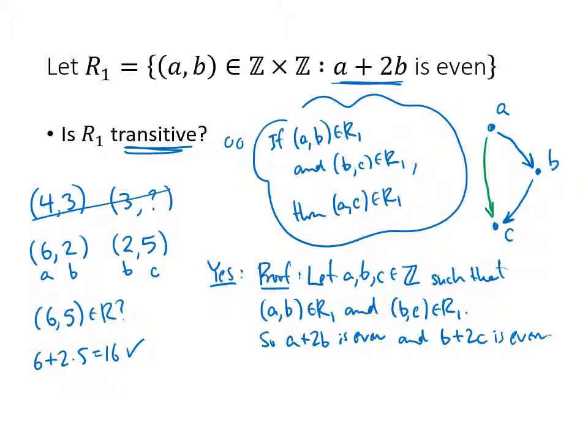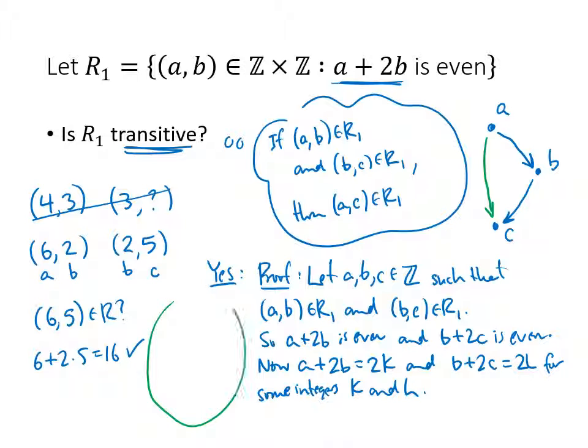Just like we've done many times, what does even mean? a + 2b is 2k, and b + 2c is 2L for some integers k and L. Our goal is to show that (a, c) is in my relation. So my goal here, what I'm thinking to myself is, is a + 2c even? That's what I'm trying to shoot for.